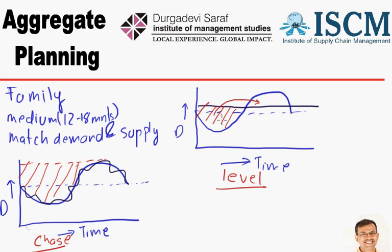Firms need to decide the greater evil. Firms where higher capacity cost is the greater problem would typically go for level capacity or level aggregate planning. Firms where inventory is a greater problem would probably go for the chase method of aggregate planning. That was a simple introduction to the level and chase methods of aggregate planning. Thank you.